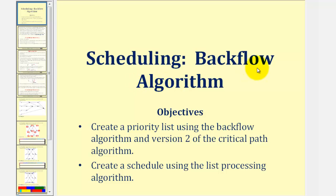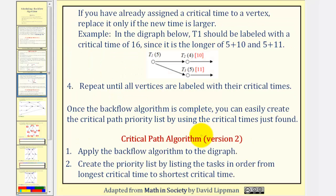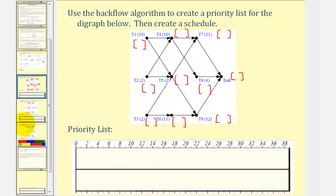Welcome to the second lesson on the backflow algorithm. In this lesson, we will create a priority list using the backflow algorithm and version two of the critical path algorithm, and then we'll create a schedule. This video assumes you're already familiar with the backflow algorithm. Let's go ahead and take a look at our example. We're going to use the backflow algorithm to create a priority list for the digraph below, then create a schedule.